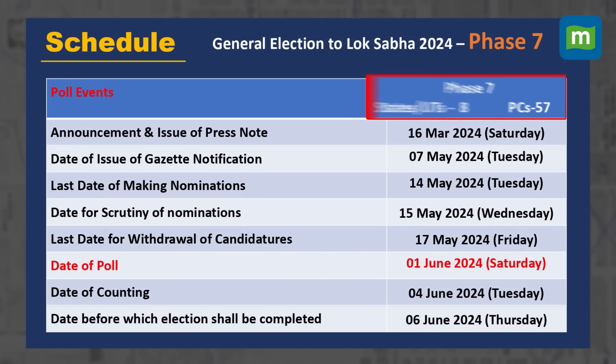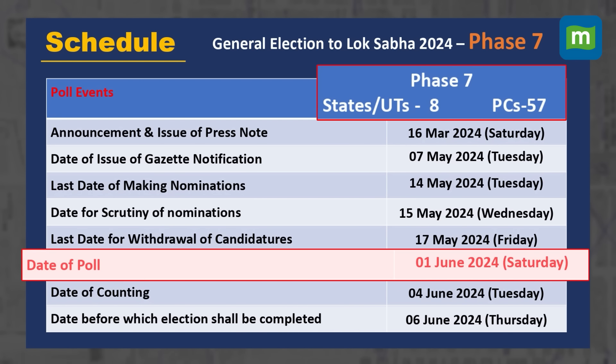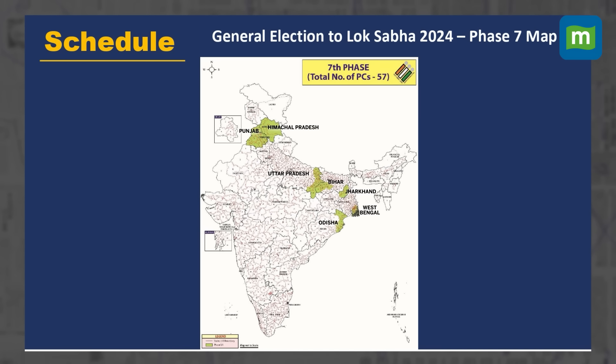The last phase, that is the 7th phase, will be held on June 1. Under this phase, Punjab, Himachal Pradesh, parts of Eastern UP, Bihar, Jharkhand, Odisha and West Bengal including Kolkata will be under polls. Under this phase, 57 constituencies of 8 states will be going to polls.